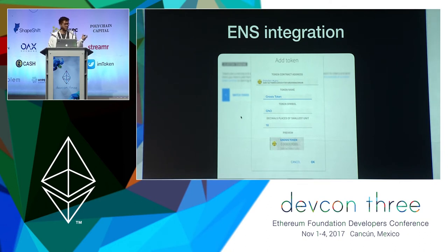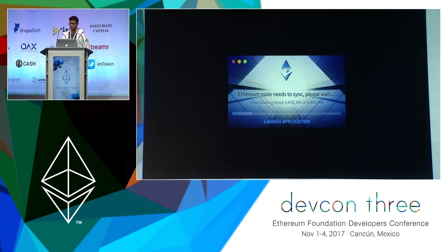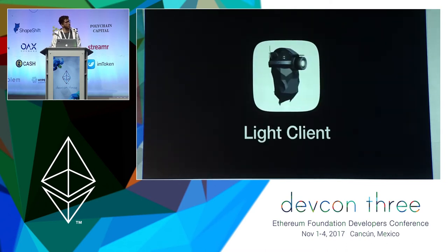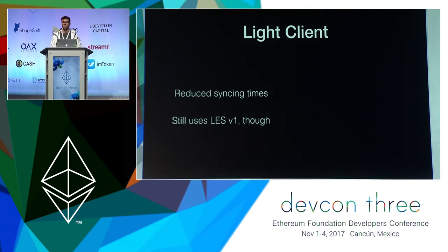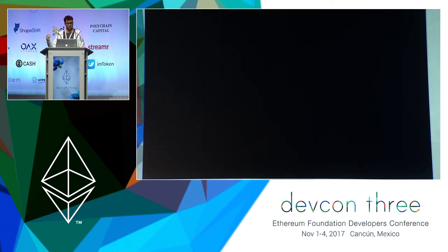After these three years, syncing was a problem for users. We got many people saying their balance was still zero after syncing for hours. So we have now integrated MIST with the light client, still in beta, and we are aiming to reduce syncing times by an order of magnitude. It's still using version one of the protocol — version two is about to come, maybe right after DevCon. Keep posted on the go-ethereum team and MIST.